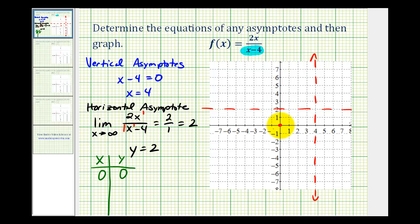Now we know from this point, the graph approaches the horizontal and vertical asymptotes. But let's determine some additional points. Let's let x equal two. If x equals two, our numerator would be four and our denominator would be negative two. Four divided by negative two is equal to negative two. So here's one more point we can plot to graph the function.